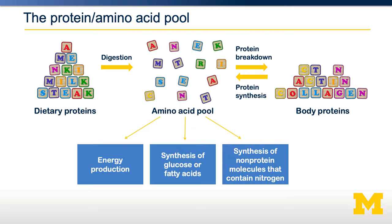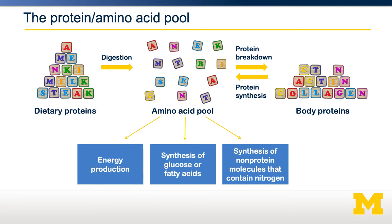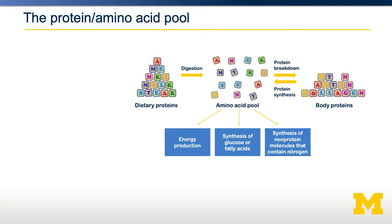An important thing to remember about proteins is that unlike carbohydrates and fats, there is no equivalent of triglycerides or glycogen. There's no neutral pool where we keep amino acids and have them available as needed. When amino acids are present, they're limiting in their free form and exist as proteins in our body. This has important ramifications for protein synthesis.